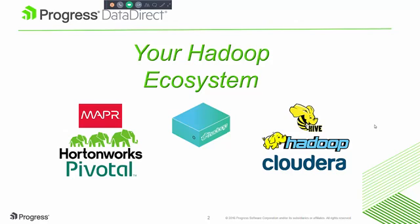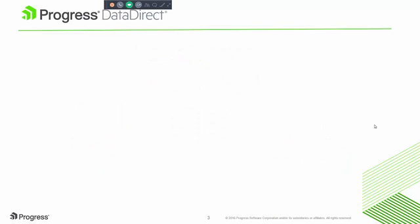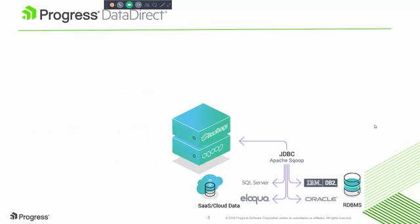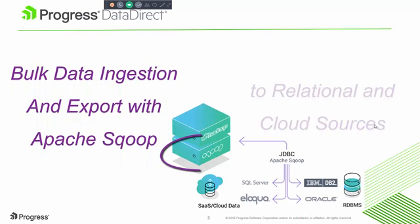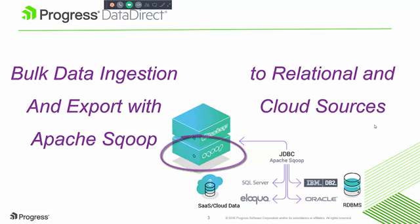Here is your Hadoop ecosystem. This can be Hortonworks, Pivotal, Cloudera, or MapR. Regardless of what your Hadoop ecosystem looks like, you can have Sqoop sitting on it. Sqoop is a tool that allows you to utilize bulk data ingestion to either import or export relational and cloud data sources into your Hadoop environment. You can do this utilizing JDBC connectivity solutions.